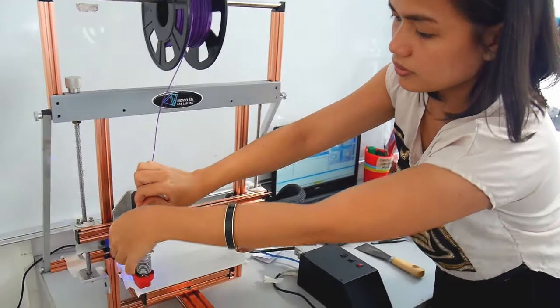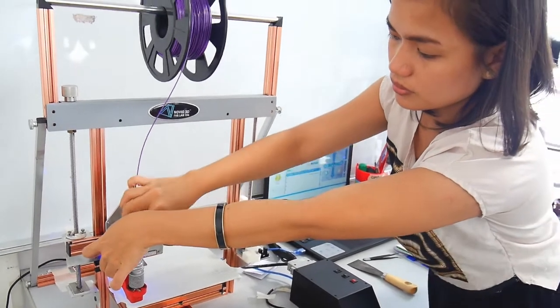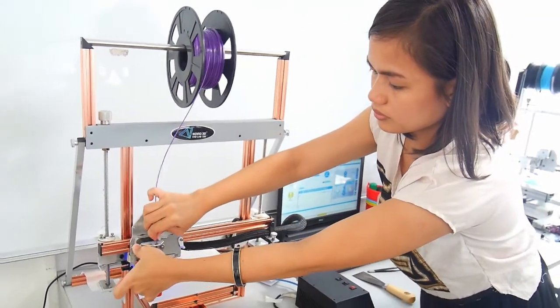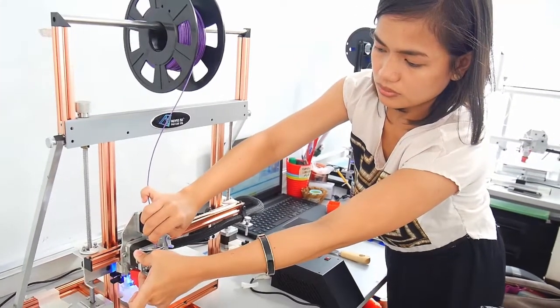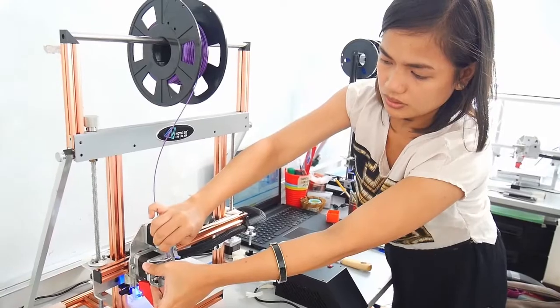Hold and press the extruder lever to have an opening to the nozzle mechanism. Then insert the print material into the nozzle mechanism. Push it through until it manually extrudes from the nozzle.